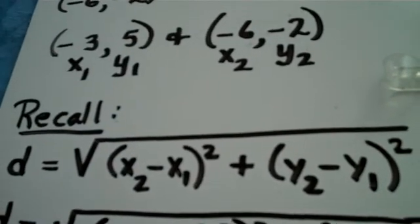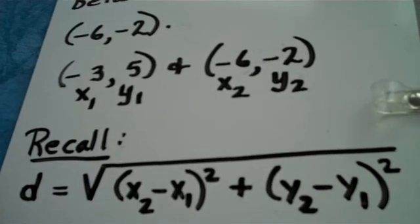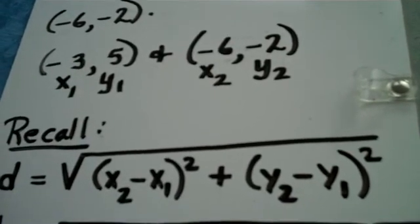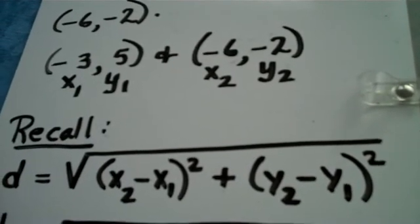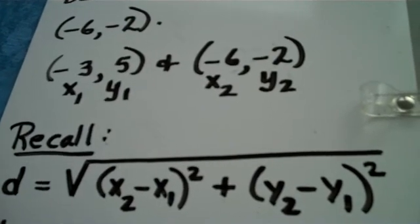So you need to make sure that the distance formula, d equals the square root of quantity x sub 2 minus x sub 1 squared plus quantity y sub 2 minus y sub 1 squared is part of your repertoire. Gotta have that in your brains, guys.